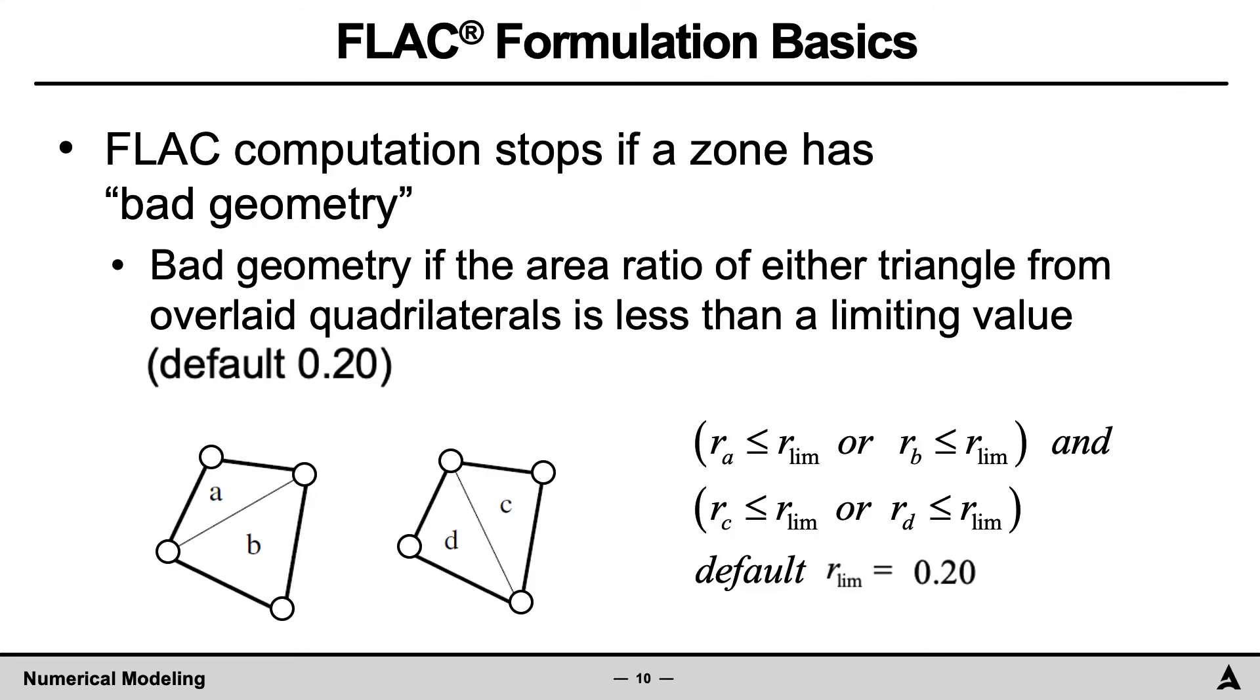With this approach of overlapping sets of triangles, FLAC continuously checks the relative shapes of the triangles and will stop if the ratio of either triangle from the overlaid quadrilaterals is less than the limiting value. The default value is 0.2. This condition is called bad geometry.